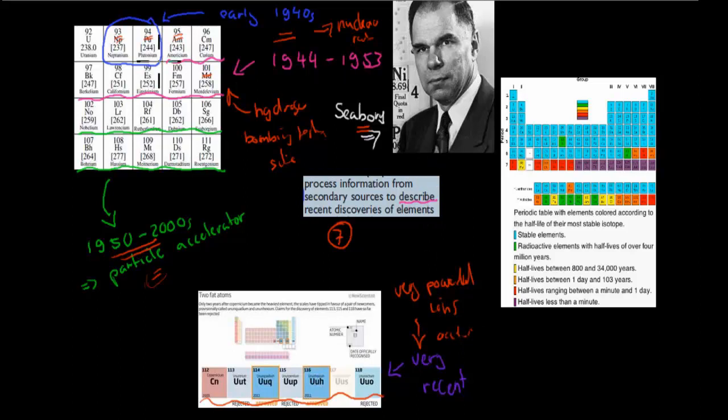And this is how we've gone from not having discovered any of these which have a number greater than 92 to have discovered most of, or quite a few of them, through this advance in technology. We've gotten particle accelerators which we didn't have beforehand, nuclear reactors which allowed us to find neptunium and plutonium. And it went in sequence, so we found the smaller ones first and the bigger ones later.